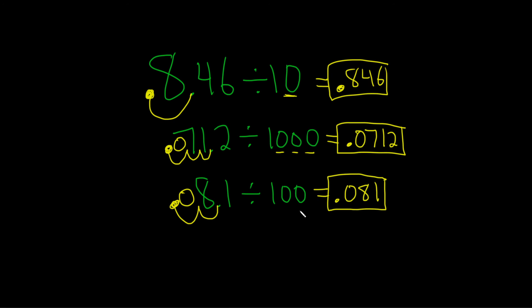So whenever you divide by 10, 100, or 1,000, just go left by however many zeros you have in the problem. I hope this video has been helpful.